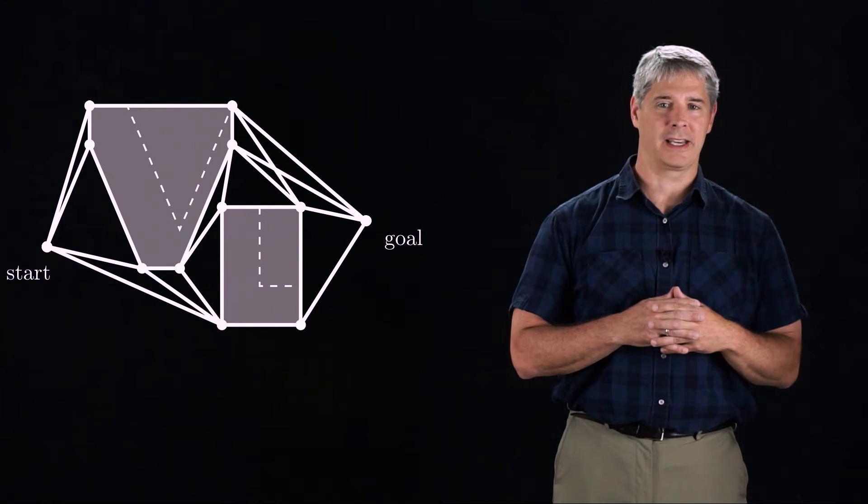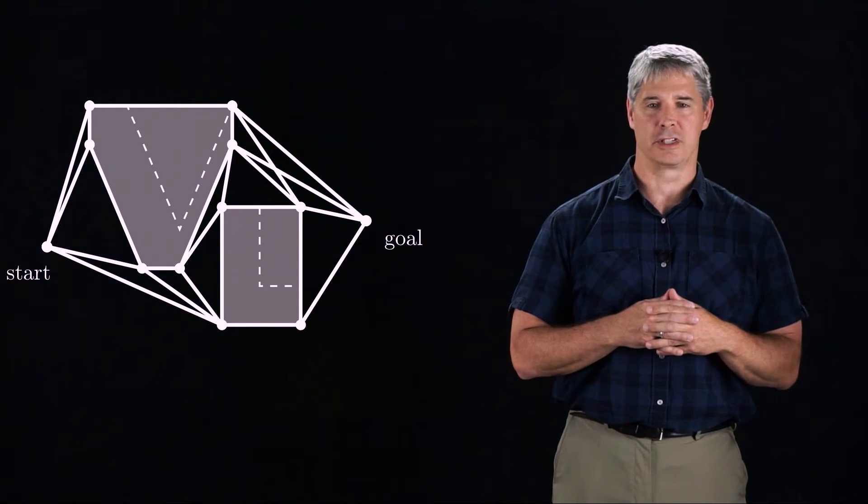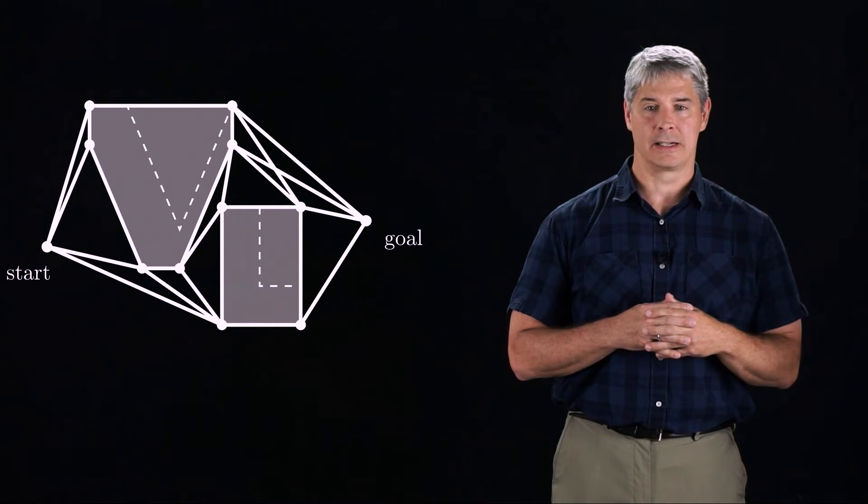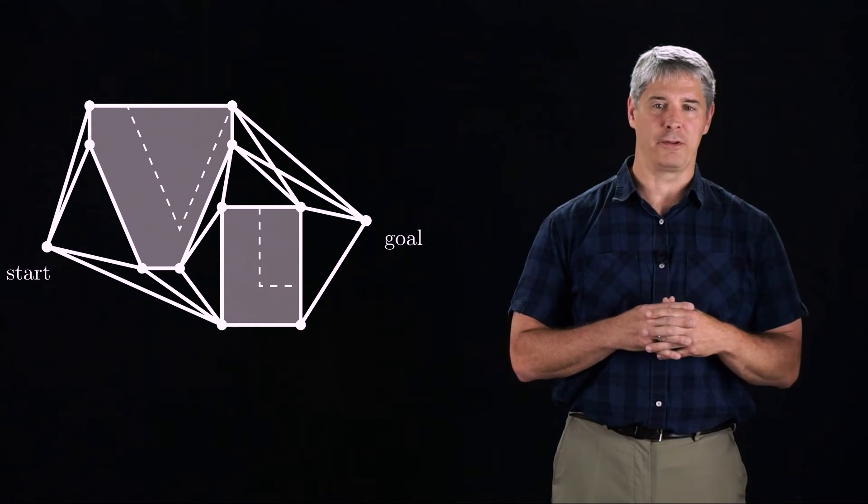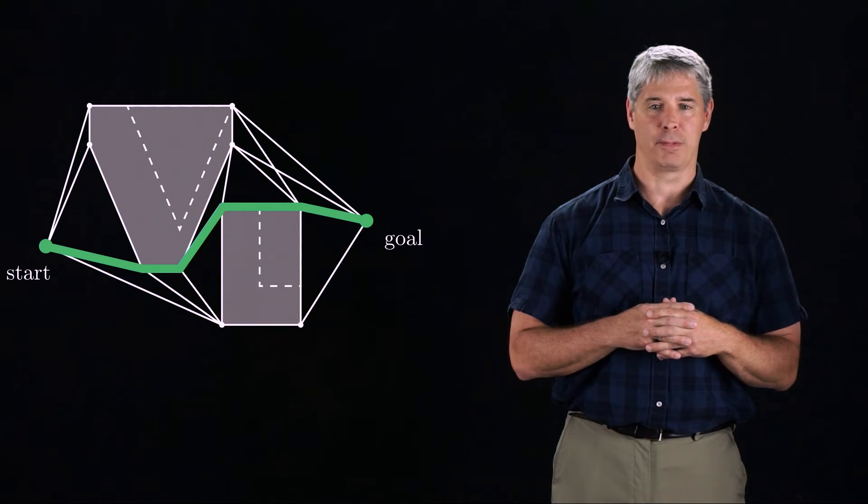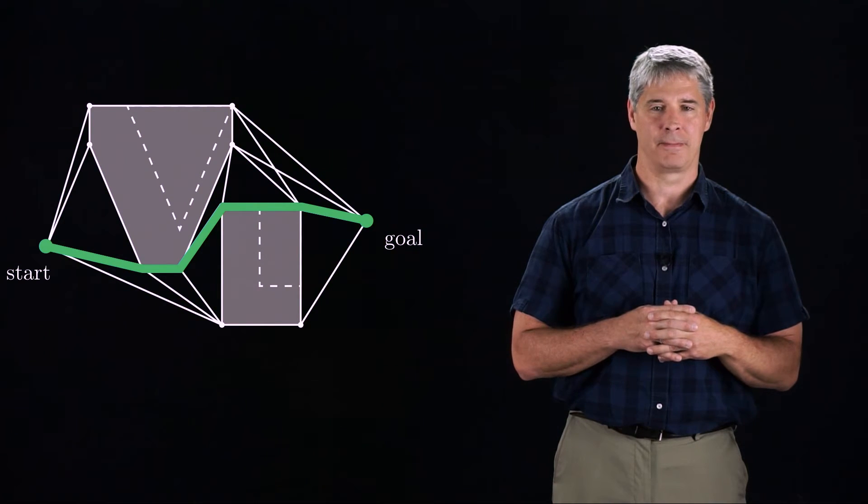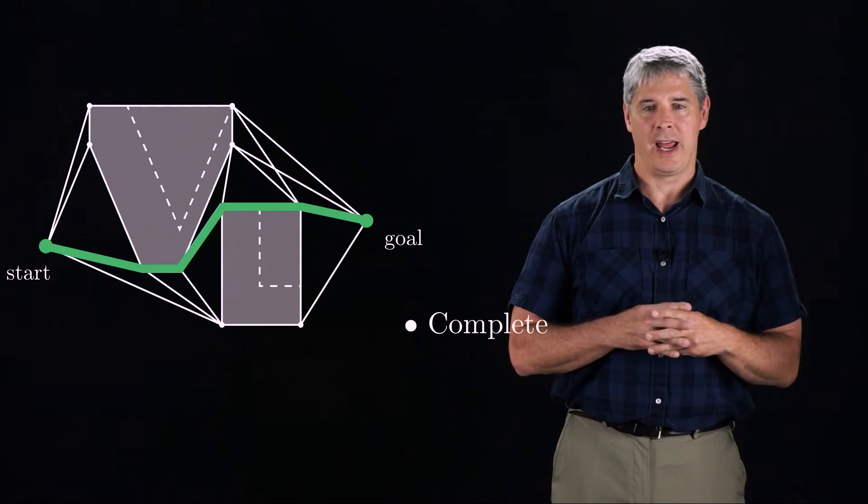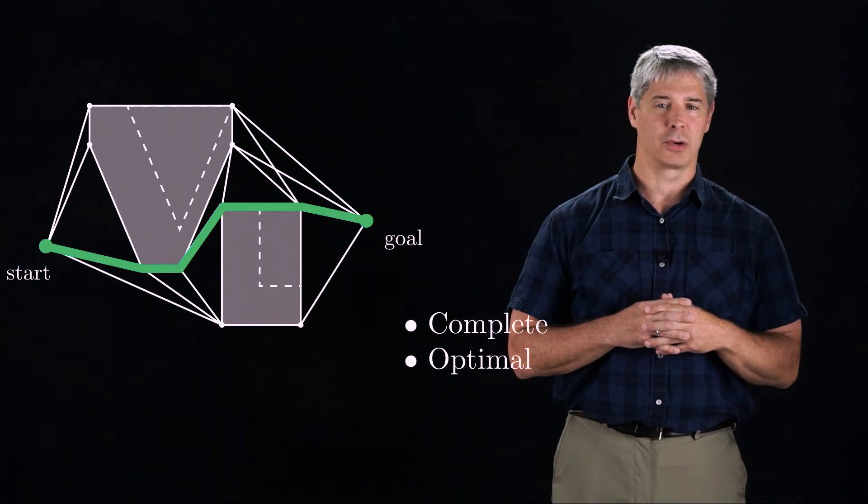We can now complete the graph by connecting the start and goal nodes to all visible nodes. Each edge has a weight according to the length of the edge. We can now search the graph using A star to find the shortest path between the start and goal configurations. This algorithm is complete since it constructs a true roadmap, and it is optimal, meaning that it finds the shortest path.